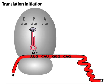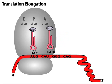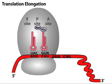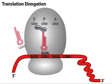With the initiator tRNA placed at the P site of the ribosome, the second stage of translation called elongation can proceed. The next aminoacyl tRNA enters the ribosome at the A site.